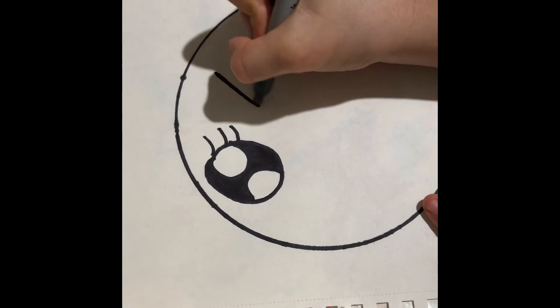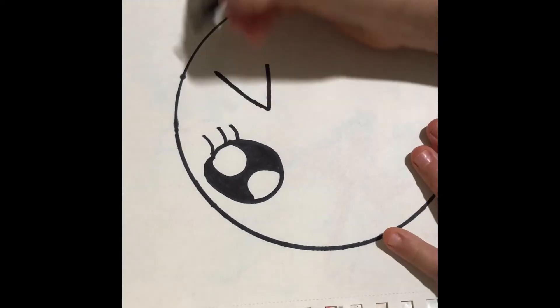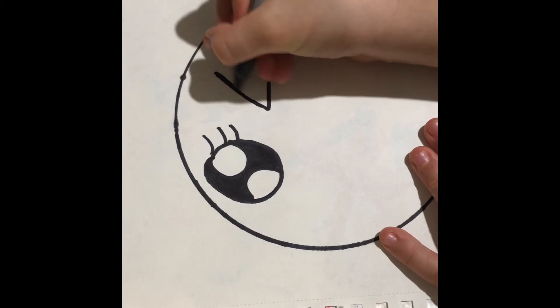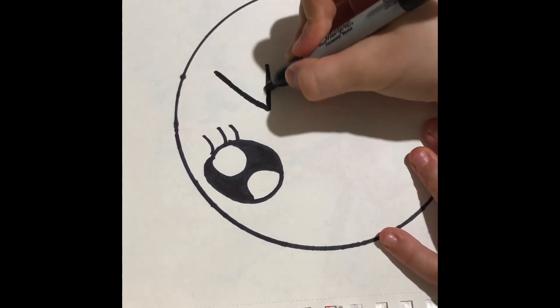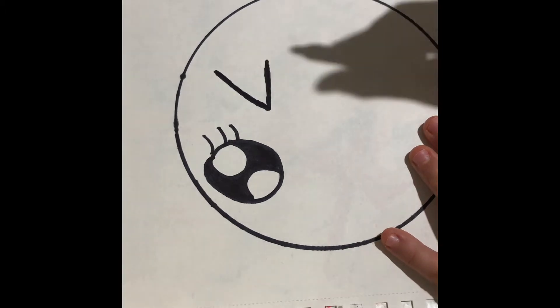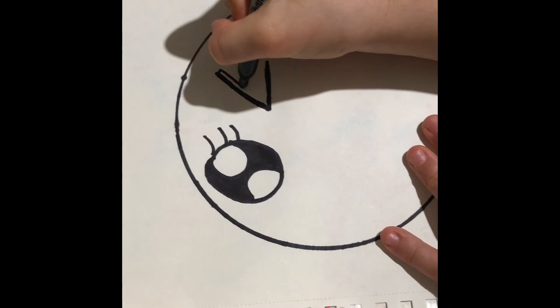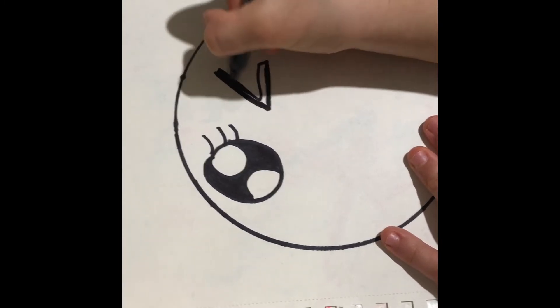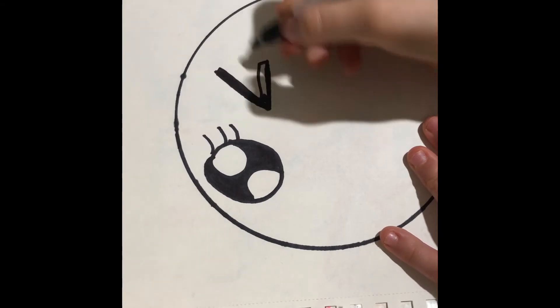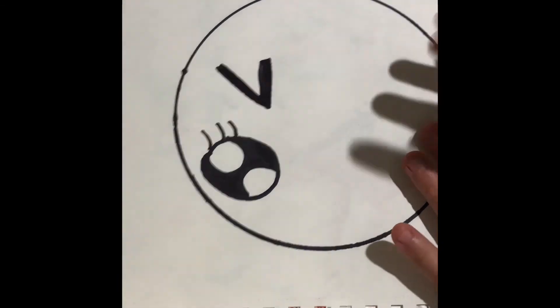And then for the other eye you can do that same thing on the side, but what we could do if you want to, you could do a little, this is called a triangle kind of just like that. So the eyes closed, so when the eye is closed it's gonna look like this. There you go.